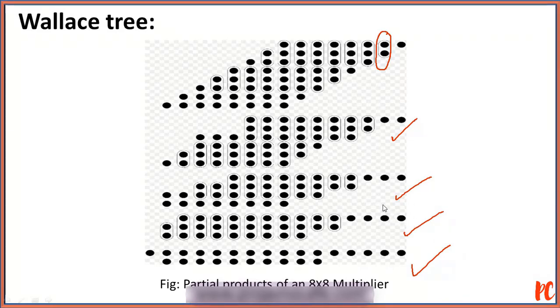The problem with this multiplier is that it uses a large number of half adders and full adders. An addition operation is being carried out here which requires a half adder, while the addition operation here requires a full adder, and vice versa.